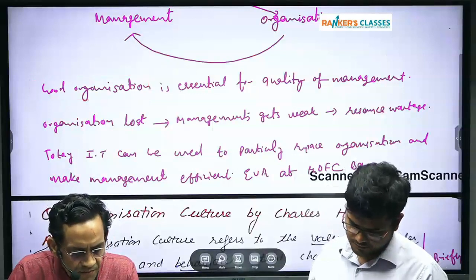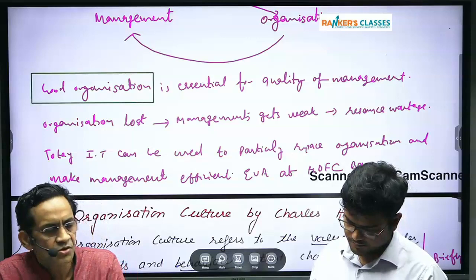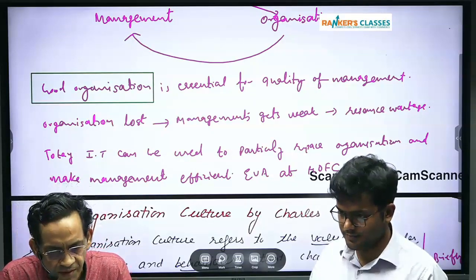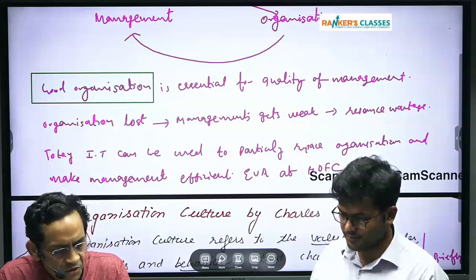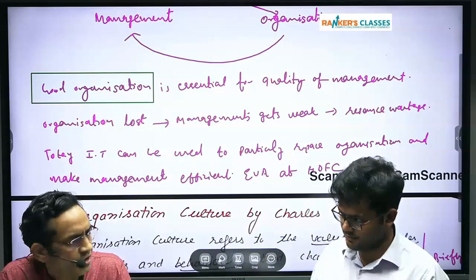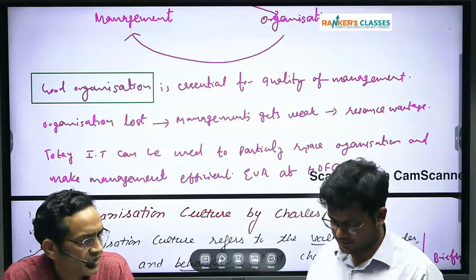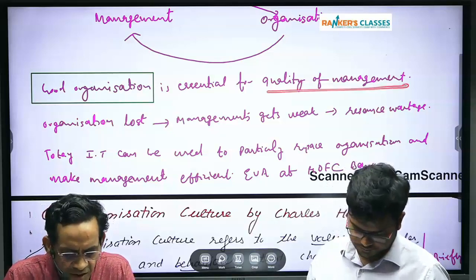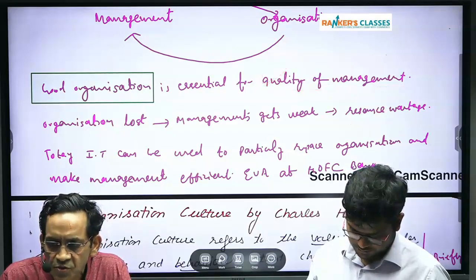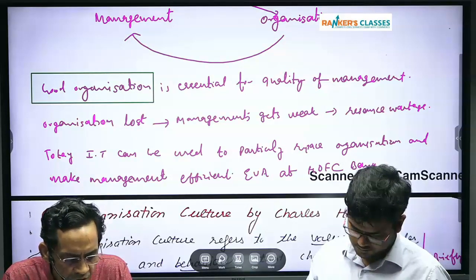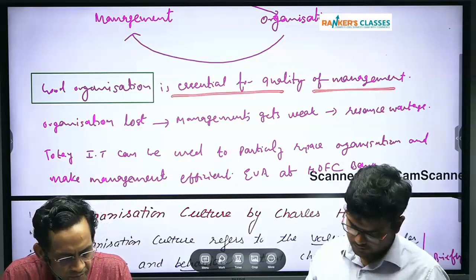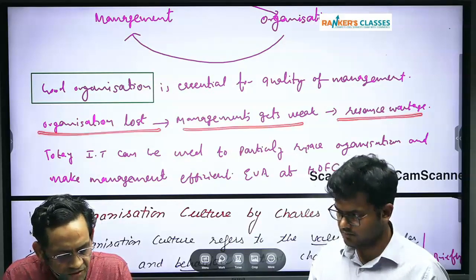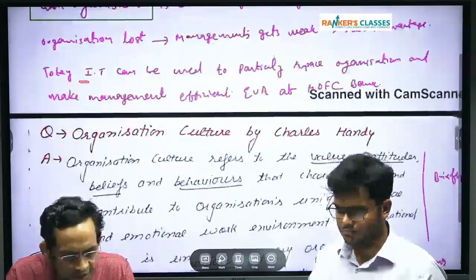You must have learned that a CEO of a company said you can take all of our properties — you can take everything — but don't take our organization. With the help of good organization we can create good management, we can create infrastructure. That must have been the key for the examiner to give good marks: that good organization is essential for quality of management. If organization is lost, management gets weak and there is resource wastage.